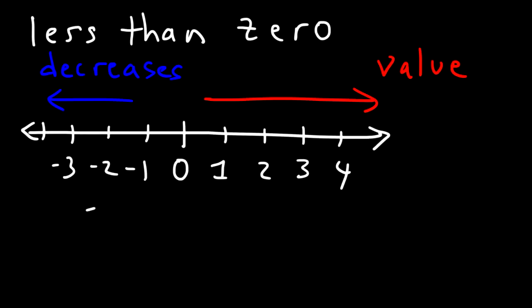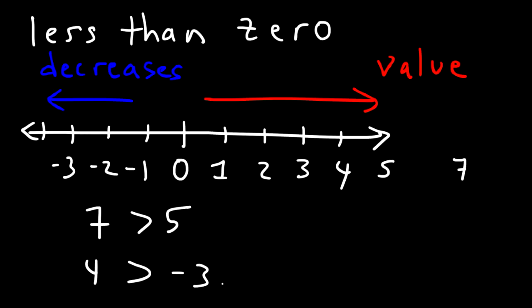For example, we know that 7 is greater than 5, because 7 is to the right of 5. But 4 is greater than negative 3. Positive numbers have greater values than negative numbers.